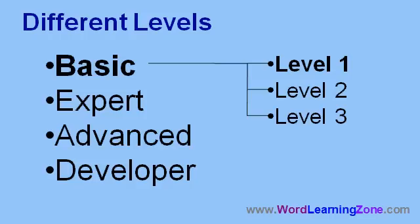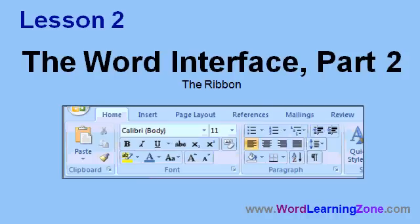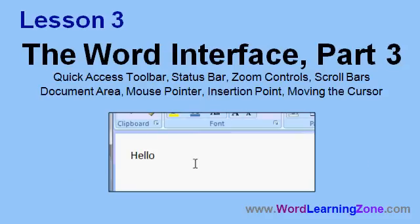Now let's take a more detailed look at what we're going to learn in today's class. In Lesson 1, we're going to begin learning about the Word interface — how to start Microsoft Word, the title bar, the maximize and minimize buttons, the close button, and the Office button. In Lesson 2, we'll continue with the interface and take a closer look at the ribbon. In Lesson 3, we'll finish the interface, covering the quick access toolbar, the status bar, the zoom controls, the scroll bars, the document area, the mouse pointer, the insertion point, and moving the cursor.